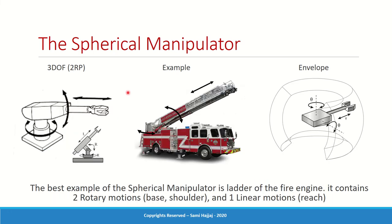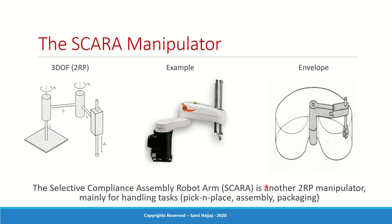The spherical manipulator has two rotational movements — one at the base and one at the shoulder — and then the arm extends. The best example of a spherical manipulator is the ladder of a fire engine: you have the base joint, the shoulder joint, and then the ladder itself extends. That's why it's called 2R1P — two rotational and one prismatic — and it draws a spherical work envelope.